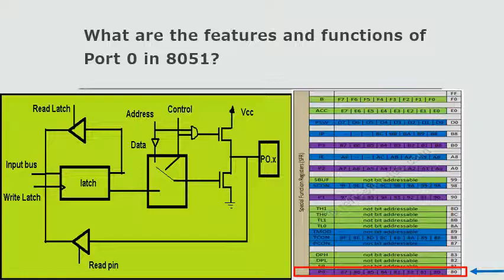Let us discuss about Port 0, its features and functions. Port 0's address is ATH. The construction of Port 0: it has a D-type latch, unidirectional buffer, and two FETs at each pin. It does not have an internal pull-up resistor. An external pull-up resistor is needed when Port 0 is defined as an output port.